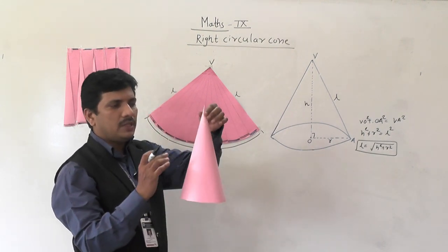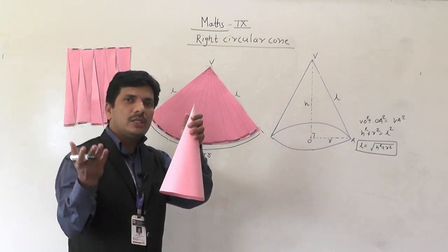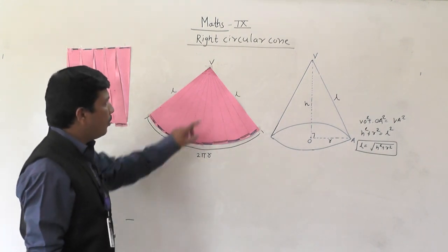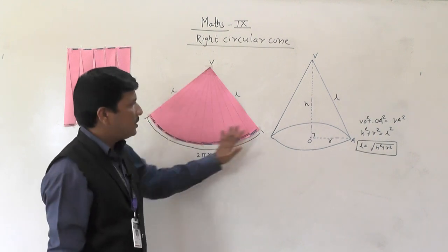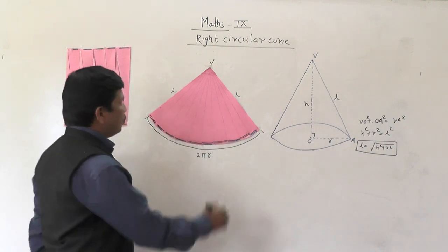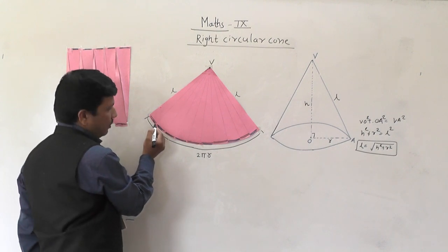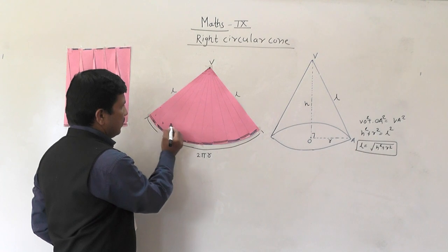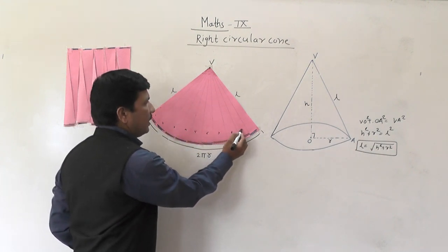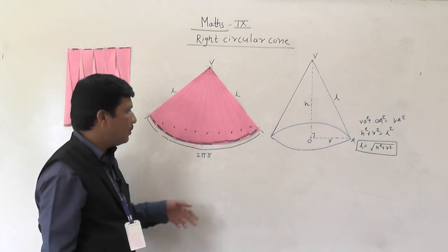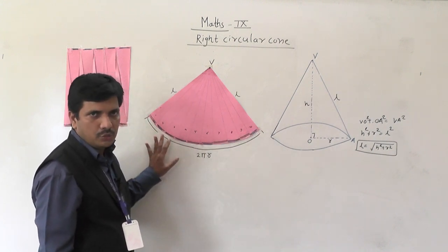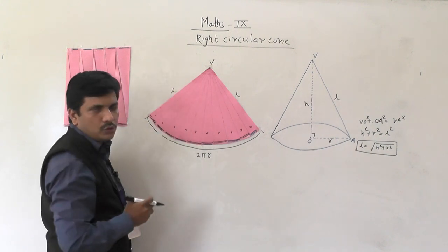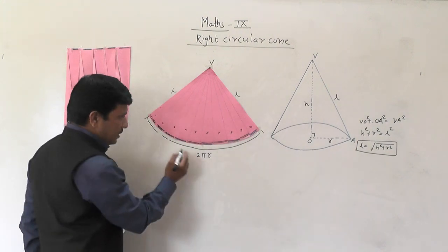First we will think about curved surface area. Curved surface area means we will not include the base area. And in total surface area, we need to include the base. So curved surface area means we have to find out this. From this top vertex, we have to split this whole cone into some strips. I am going to join from this point to the circumference at the end. So we have split this whole paper into 10 strips — 1st, 2nd, 3rd, up to 10th. You can do as many as possible. So here it is split into 10 strips.